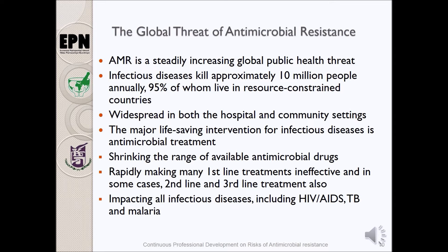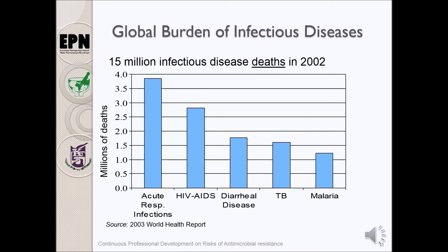As a result, there is a negative impact on the management and treatment of infectious diseases, including HIV, TB, and malaria. Looking at the global burden of infectious diseases, 15 million infectious disease deaths occurred in 2002, according to the WHO report for 2003. All the top five diseases that caused death were infectious diseases, and most of these can be treated with antimicrobials. If these trends increase, the number of deaths due to infectious diseases are likely to rise.